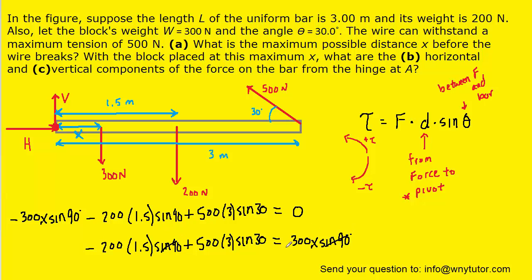This is a nice equation because everything in it is known except for X. We can add the 300 X sine 90 over to the right and then we can cross off the sine of 90s since those are 1, and then we can divide both sides by 300 and that way we can isolate X. When we solve for X, X turns out to be exactly 1.50 meters, so this would be the correct answer to part A. We now know that that distance is 1.5, and what's interesting is that 1.5 meters would place the box directly in the center of the bar.